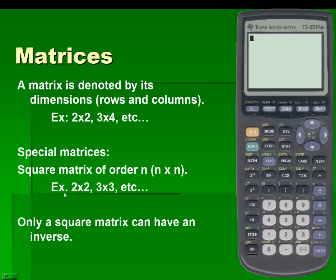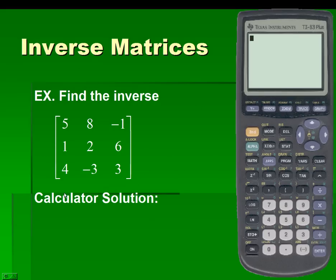Only a square matrix can have an inverse. With that being said, we shall find the inverse for the following matrix. Keep in mind that only a square matrix can have an inverse. This matrix has three rows and three columns, which classifies it as a square matrix, so we can find its inverse.